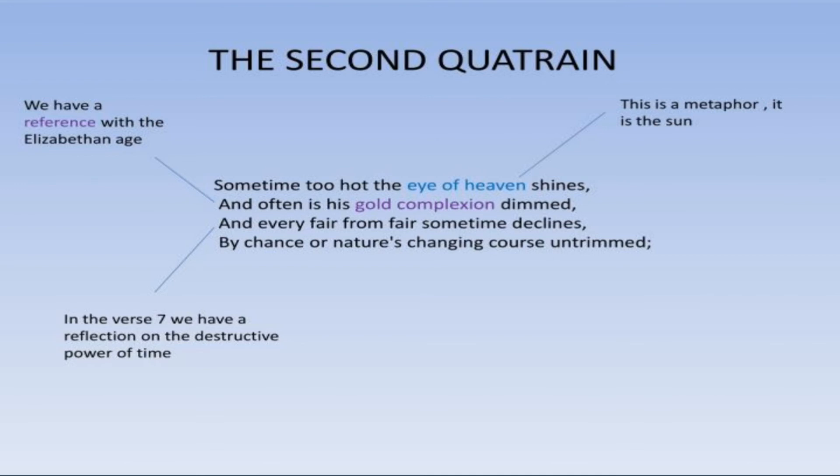In the third line, 'fair from fair' — here it is the use of alliteration, because the poet has repeated the letter F three times. In the fourth line, there is the use of consonance between chance, nature, and changing.